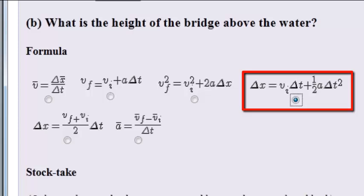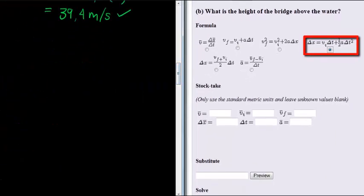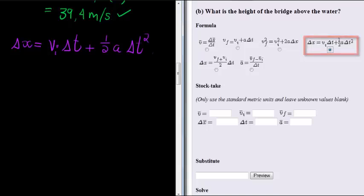And this formula will do the trick. So using that formula, we have Delta X is equal to initial velocity times change in time plus a half acceleration times change in time squared. Initial velocity being 10, time being 3, a half times 9.8.